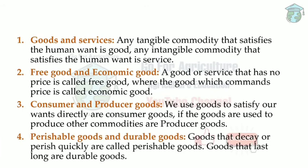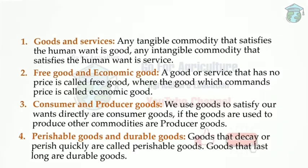Perishable goods decay very quickly, like food, fruits, or vegetables. Durable goods have a long shelf life, like machinery we use. These are perishable goods and durable goods.